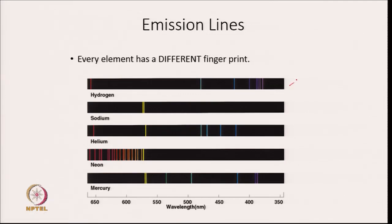If you look at hydrogen, its lines are at these specific points — four points — which is quite different from the spectral lines of sodium atom. They are not at the same position, and if you look at helium, it also has quite different spectra compared to hydrogen and sodium. Similar is the case for all atoms. So if we look at atomic spectra of different elements, we will be able to figure out which element is present in that particular sample.